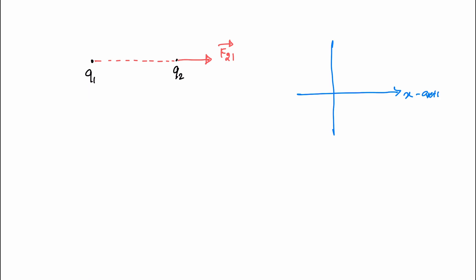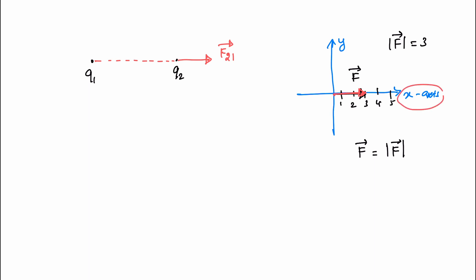This is a vector on the x-axis. If you look at this vector, the length of this vector is 3 units. That is how we express the length of the F vector — it is equal to 3. If we express this vector: F vector equals the length of F vector multiplied by the direction of F vector. The direction along the x-axis is i-cap. So F vector equals the magnitude of F vector times i-cap, where i-cap is the direction unit vector for the x-axis.